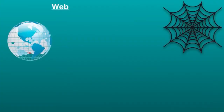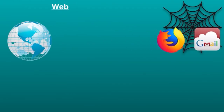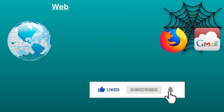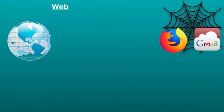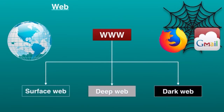Hello everyone, today we are going to step through the three parts of the web or internet. Most people think that internet is what they experience through their email client or web browser every day. But many services work in the background, and the web is just one part of it. There are three layers commonly used to divide the web: surface web, deep web, and dark web.